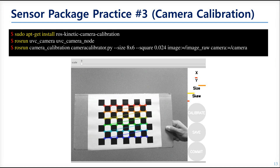The third practice is to calibrate the camera. In almost all cases, the camera you have will already be calibrated, with calibration data stored in the camera's firmware or driver, so you don't need to calibrate again. But if you are going to use a fisheye camera, or a camera with much distortion, or nodes that require a calibration matrix, then you should do this.